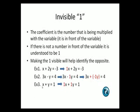And in our third example, we have both x and y with a coefficient not visible, and it is the understood 1. So if you put them in there, you can see that the coefficient of the x is 1, and the coefficient of the y is 1.